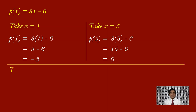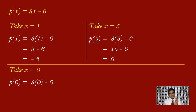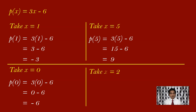Let us take one more value. I'll find p of 0. So we have to find p of 0. This will be 3 of 0 minus 6. 3 zeros are 0, minus 6. You will have minus 6. So p of 0 is minus 6.